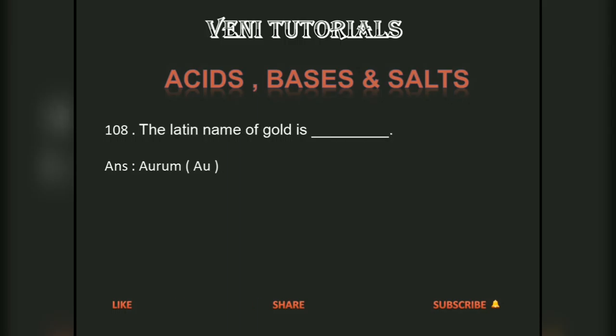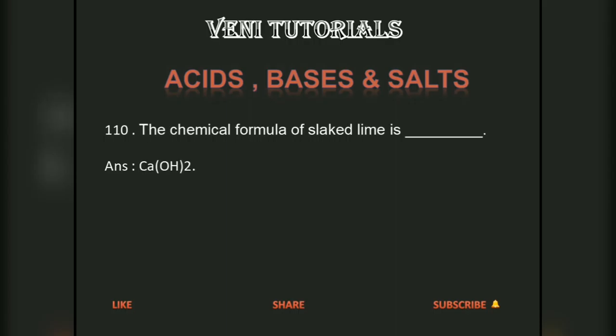The Latin name of gold is Aurum. The atomic number of gold is 79. The chemical formula of slaked lime is Ca(OH)2.